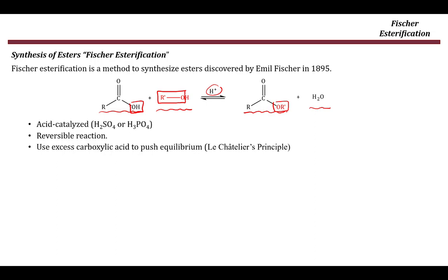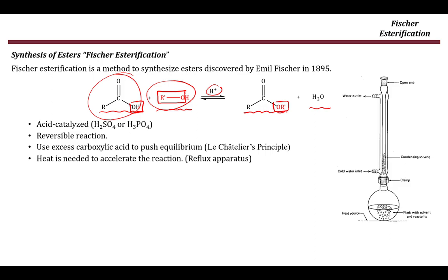Usually we use an excess amount of the carboxylic acid to push the equilibrium to the right, because of Le Chatelier's principle. Whenever you want to push the equilibrium to the right, you increase the amount of one of the reactants — in this case we increase the amount of the acid to push the equilibrium to the right and increase the yield of the reaction.